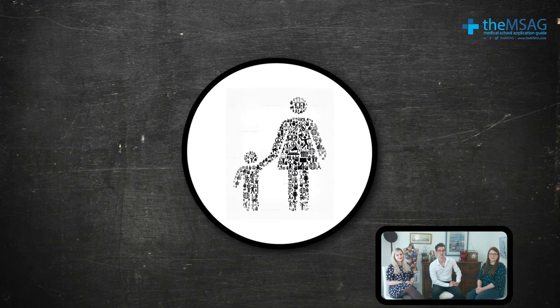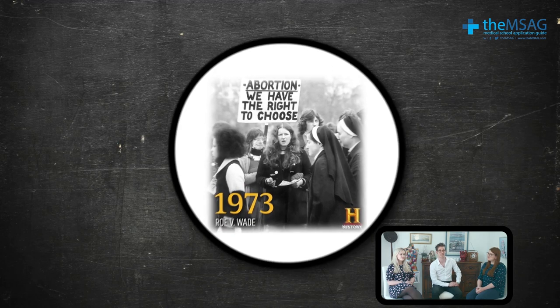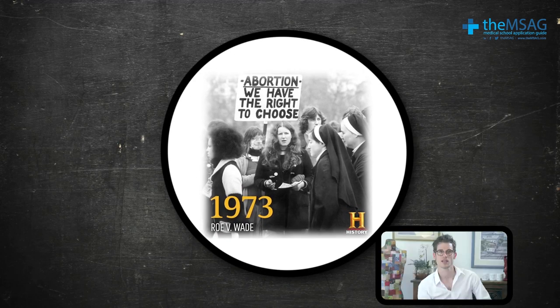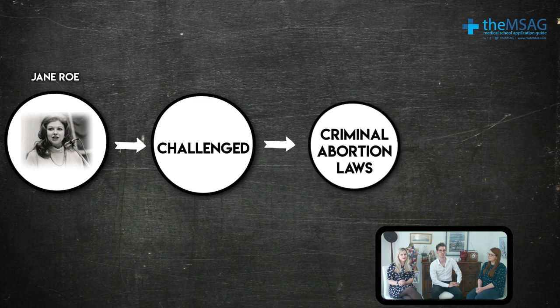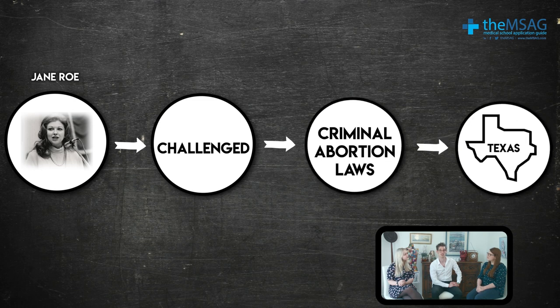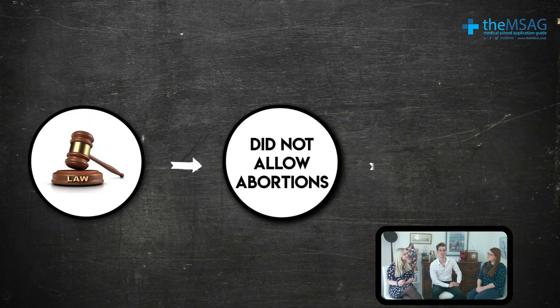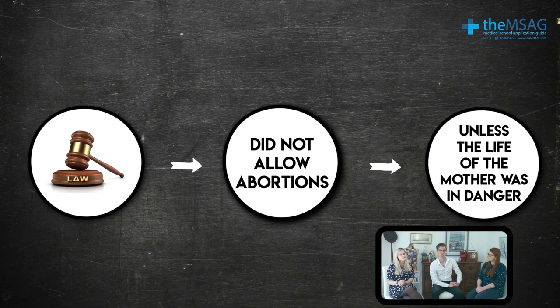I have an interesting legal case in relation to the rights of the mother: the case of Roe versus Wade in 1973. This was a US Supreme Court judgment. In 1969, a 25-year-old lady under the pseudonym Jane Roe filed the case challenging the criminal abortion laws in Texas. At the time, this law did not allow abortion unless the life of the mother was in danger. Even though Roe had said she had been raped, her case was rejected and she was forced to give birth.